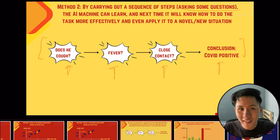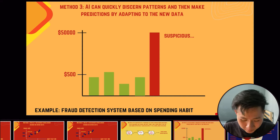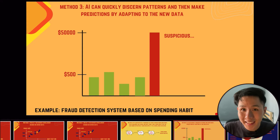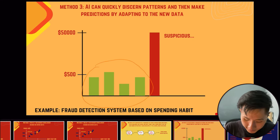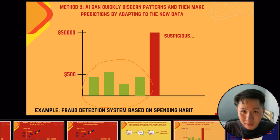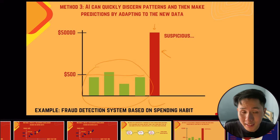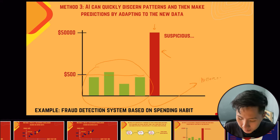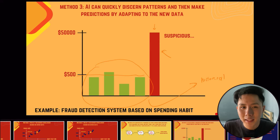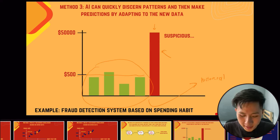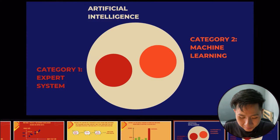AI can also quickly identify patterns and make predictions by adapting to new data. For instance, given a bank account's transaction history for a certain month, if a transaction suddenly exceeds the normal average, the computer can detect this anomaly based on historical data and inform the bank that something may be wrong. AI can be taught to discern certain patterns from historical data.